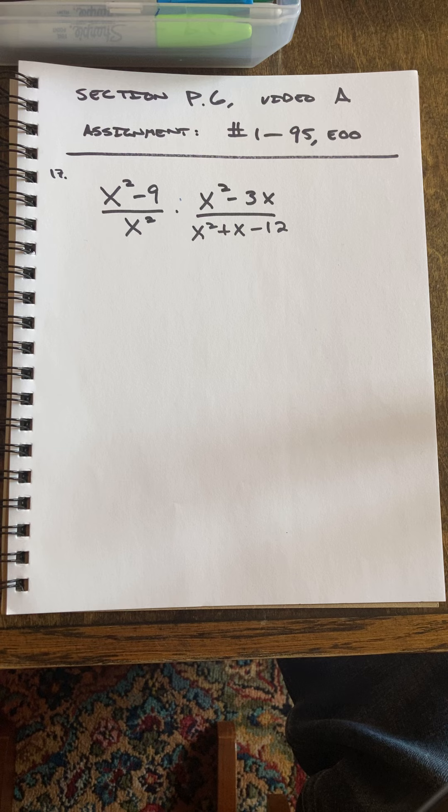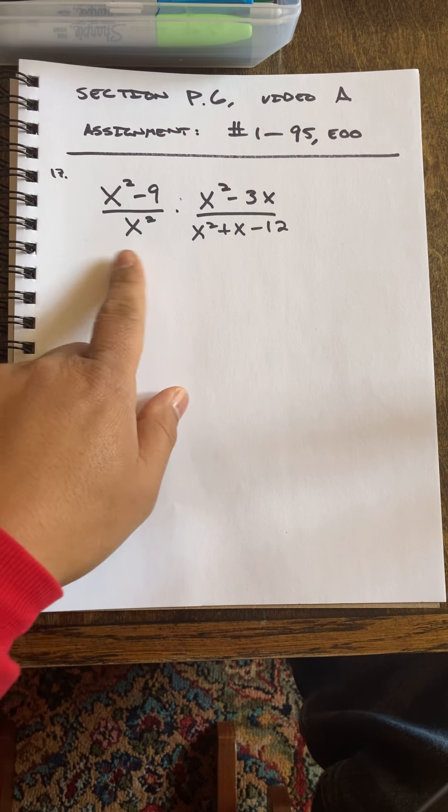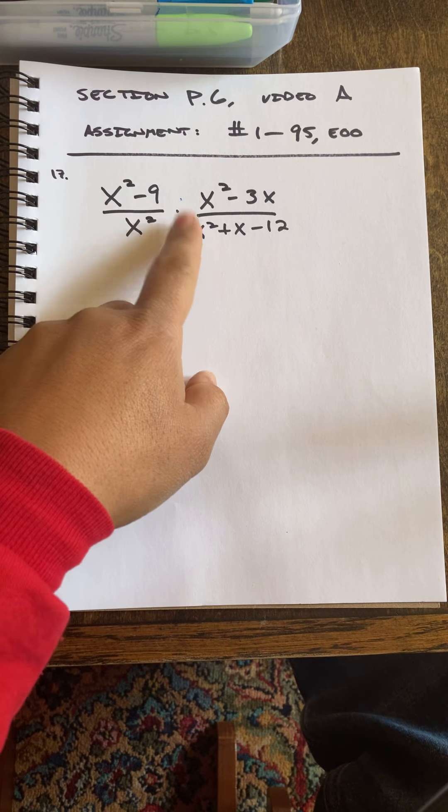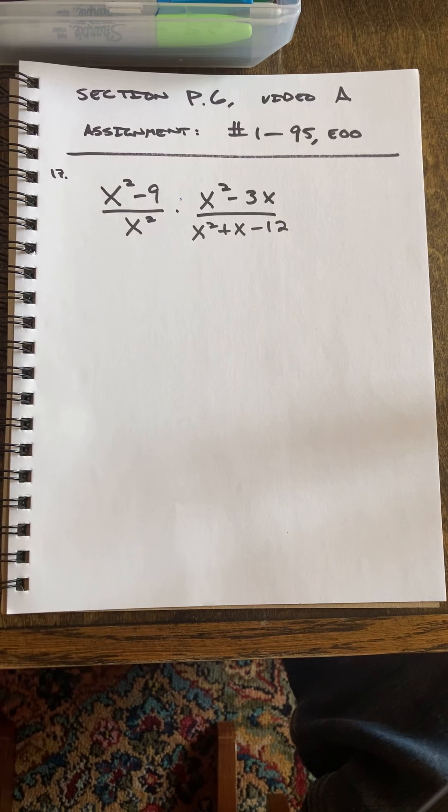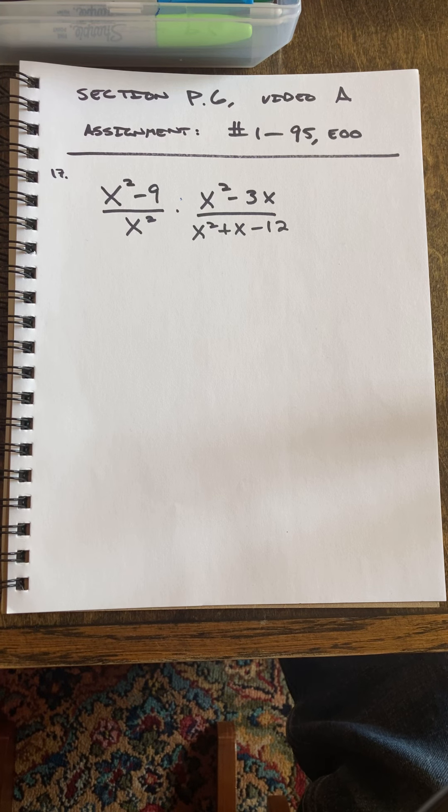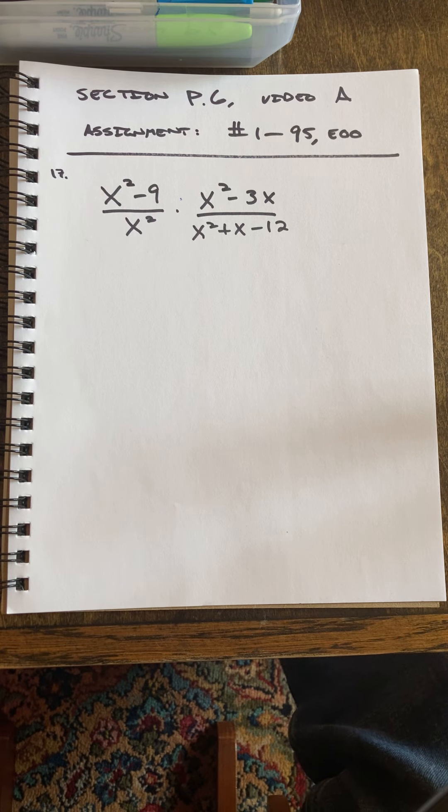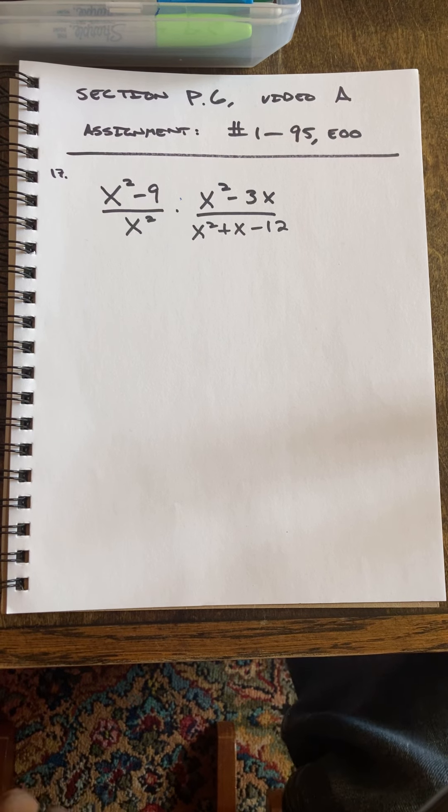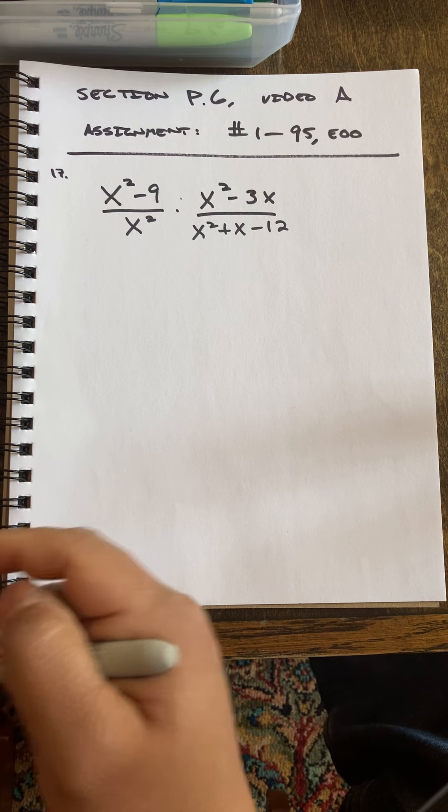For problem number 17, we are just going to multiply this whole thing times this whole thing here. Nothing too exciting, fortunately. This is kind of one of those problems that are just long.